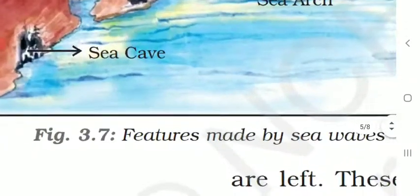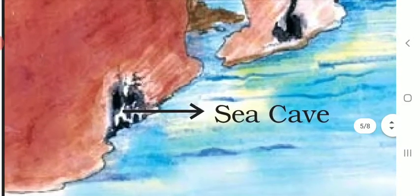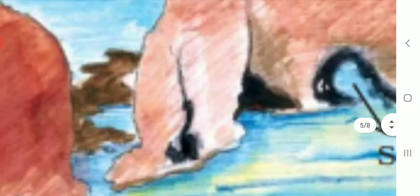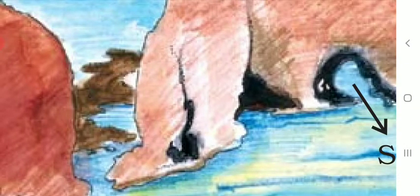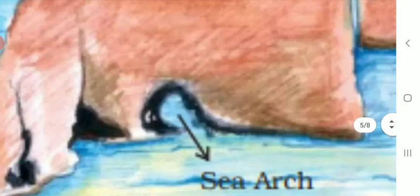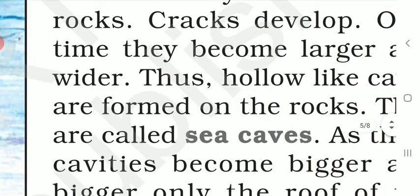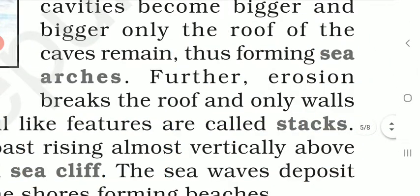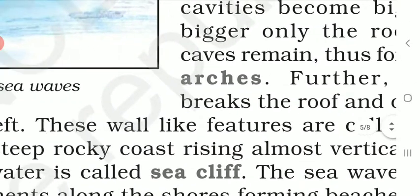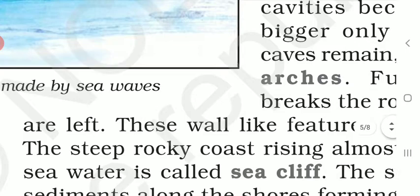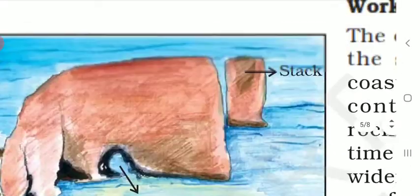Can you see here? This is a sea cave. This crack is formed because of the striking of the water, which then converts into sea caves. When only the roof is remaining, these hollows are called sea arcs. When further erosion breaks the roof and only walls are left, these wall-like features are called stacks — as you can see in this picture.